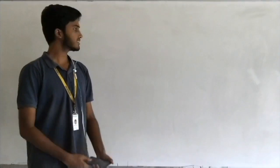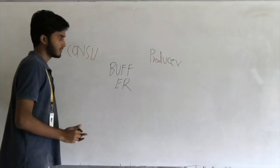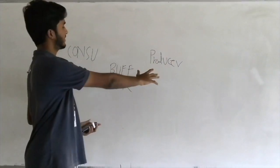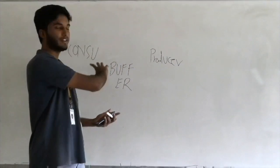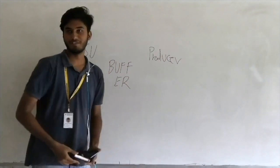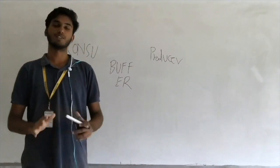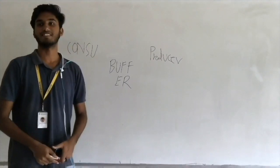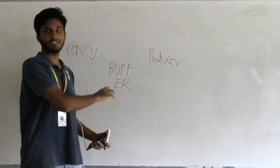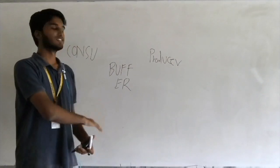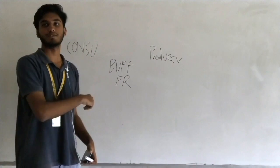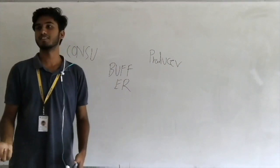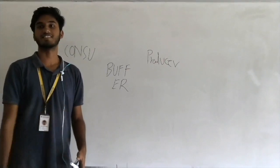In a computer system we have a producer and a consumer with a buffer in between. The buffer acts as a storage area. The producer produces information which is stored in the buffer, and the consumer consumes that information. It works on the first-in, first-out principle, which you're probably familiar with from data structures.